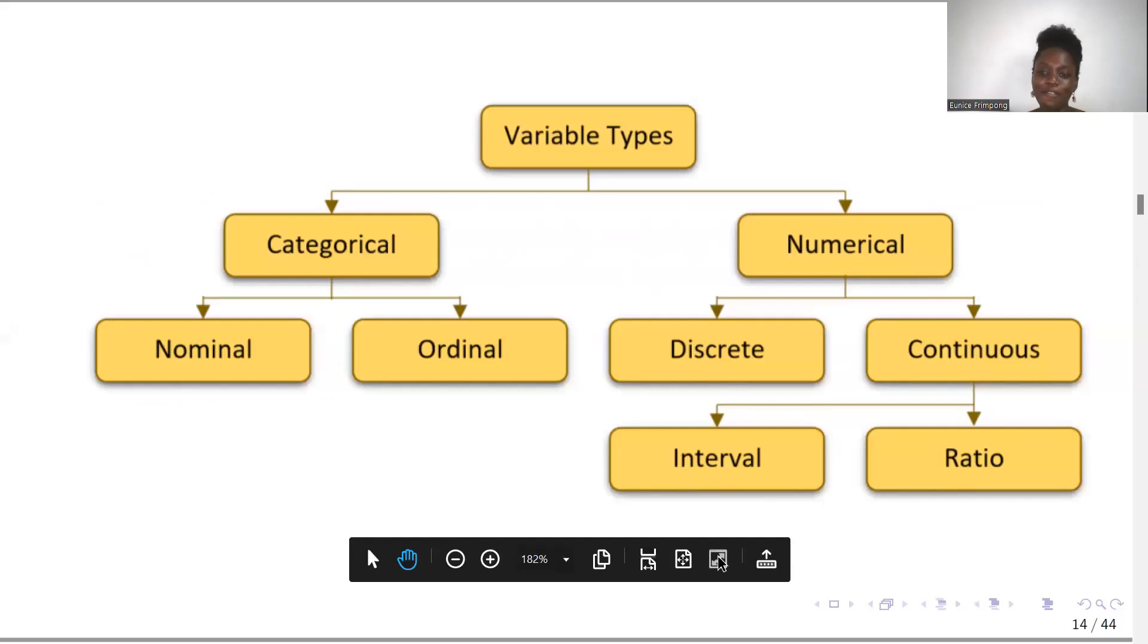Now let us look at the types of variables. There are a number of types of variables we may want to consider. In classifying variables, we categorize them first of all into two: we have the categorical variables and then we have the numerical variables.